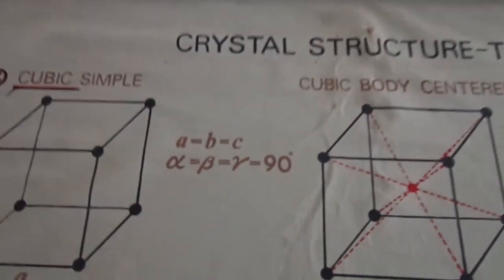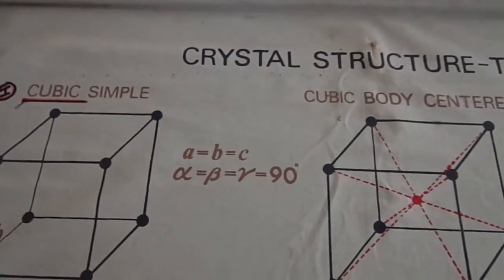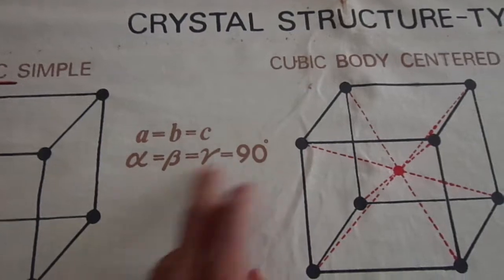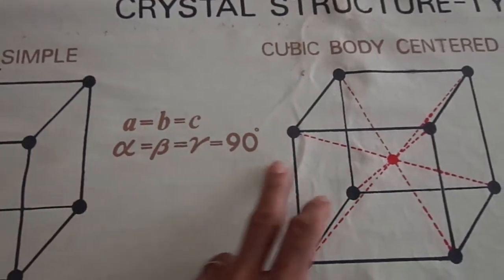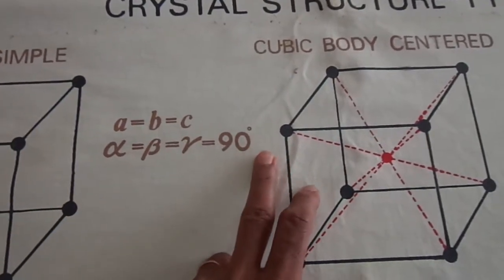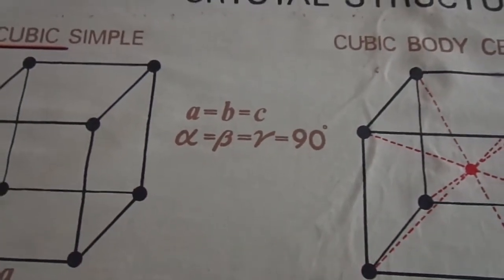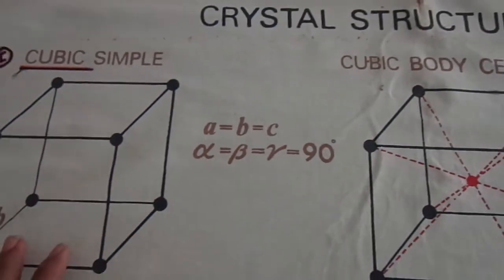In the case of a cubic system, A is equal to B is equal to C, and alpha, beta, gamma are all equal to 90 degrees. So that represents a cube. In this system, there are three subdivisions.